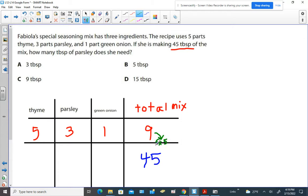So if we do nine times five to get this number, then we should do one times five, we should do three times five, and we should do five times five to get the respective numbers. So they're interested in parsley.